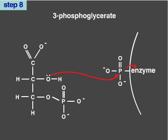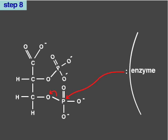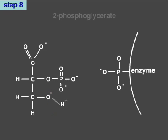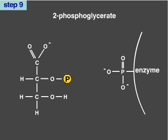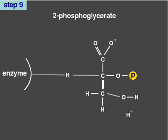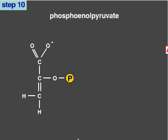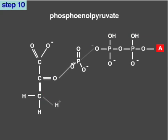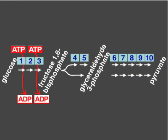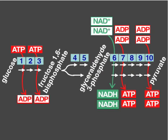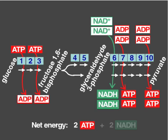In the 8th step, 3-phosphoglycerate, which has a relatively low free energy of hydrolysis, is transformed by the enzyme phosphoglycerate mutase into 2-phosphoglycerate. In the 9th step, the enzyme enolase removes a water molecule from 2-phosphoglycerate, creating phosphoenolpyruvate. The loss of water redistributes energy within the molecule, creating a phosphate group with an extremely high free energy of hydrolysis. In the 10th and last step of glycolysis, the enzyme pyruvate kinase transfers the high-energy phosphate group to ADP, forming ATP and pyruvate. Overall, the net energy produced in glycolysis from a single molecule of glucose is 2 molecules of ATP and 2 molecules of NADH.